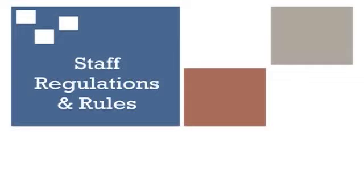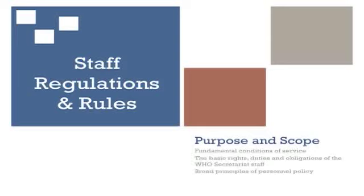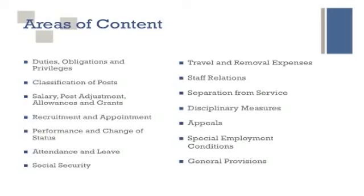You will be given a series of four situations where you will review the situation and then refer to the staff regulations and rules. The purpose and scope of this activity is to review some of the fundamental conditions of service, the basic rights, duties, and obligations of the WHO secretariat staff, and the broad principles of personal policy.